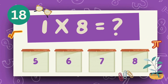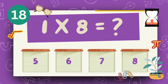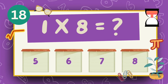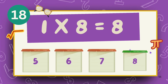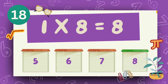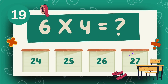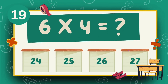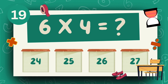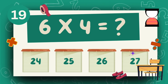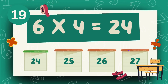What is 1 multiply 8? The answer is 8. What is 6 multiply 4? The answer is 24.